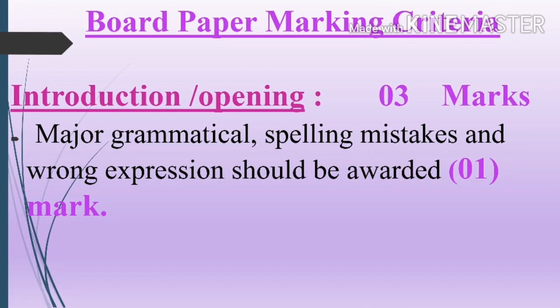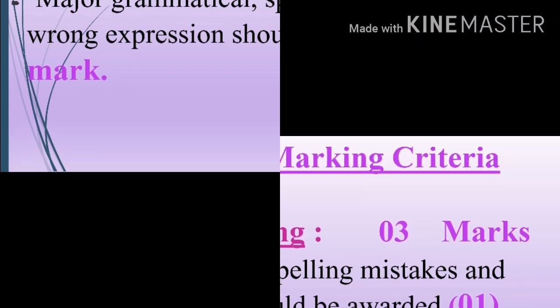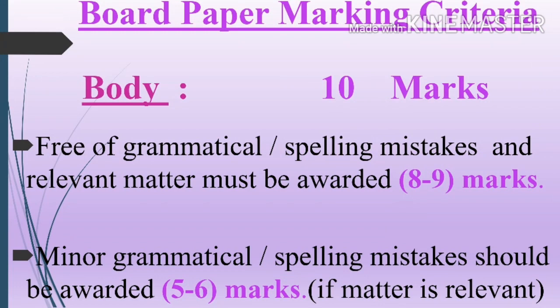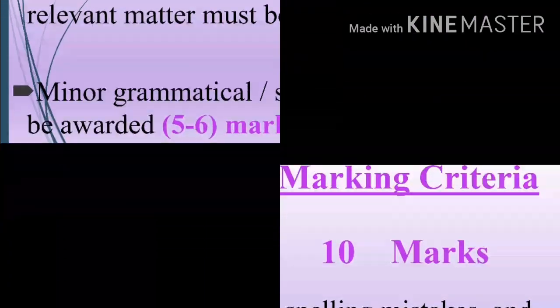Second, body — it carries 10 marks and is the main part of the essay. Free of grammatical and spelling mistakes with relevant matter must be awarded 8 to 9 marks. Minor grammatical and spelling mistakes should be awarded 5 to 6 marks if the matter is relevant.